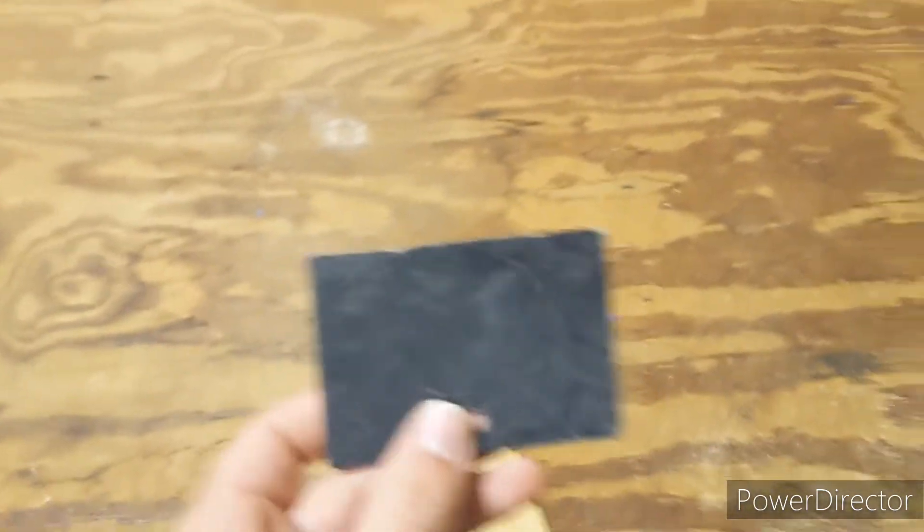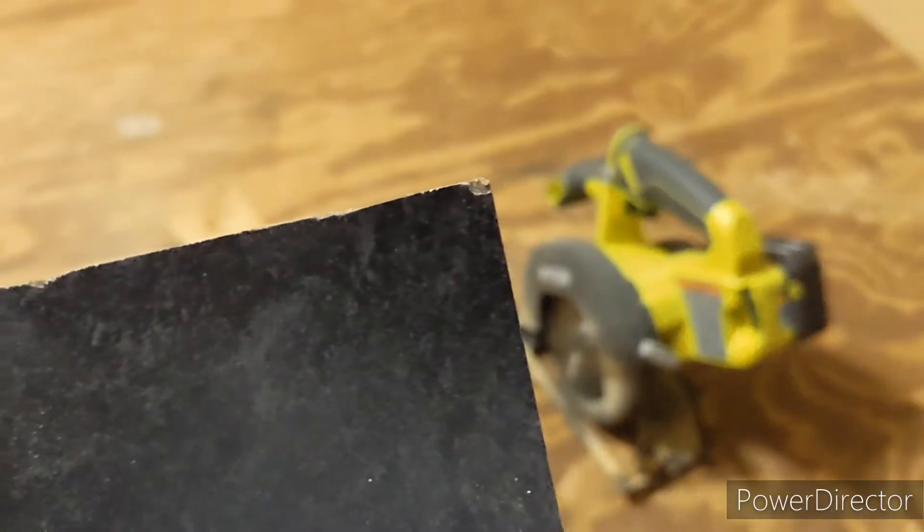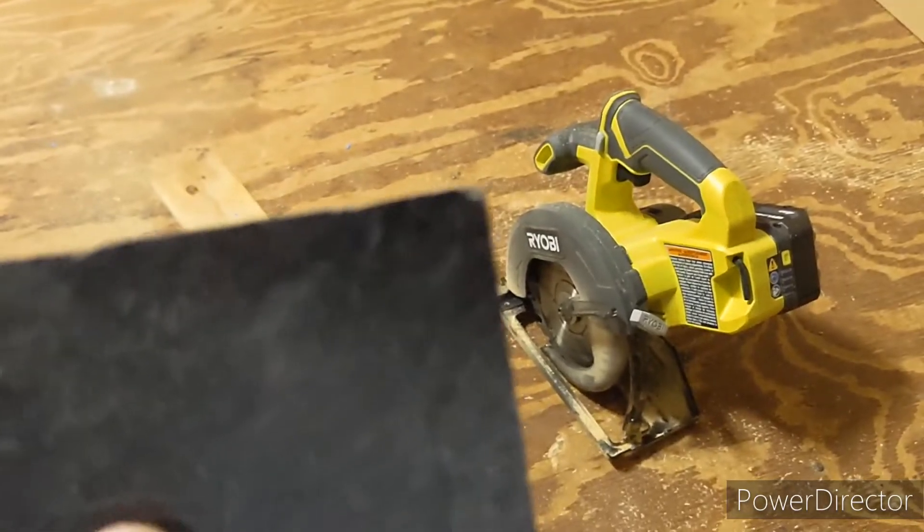I saw where some people just use a circular saw, so I did a test with it. You can see here where it's chipped. It's not chipped too bad, and realistically it probably wouldn't be the end of the world just because I'm going to have some overhang that I'm going to take off with the router bit.